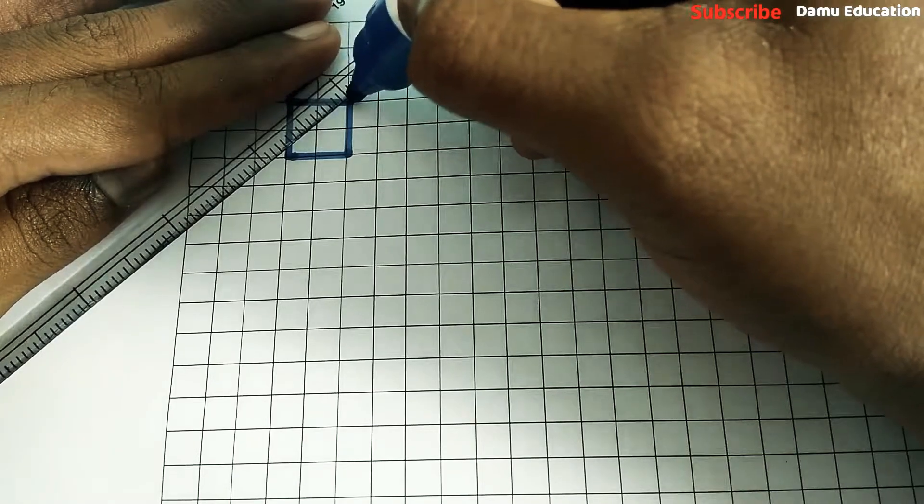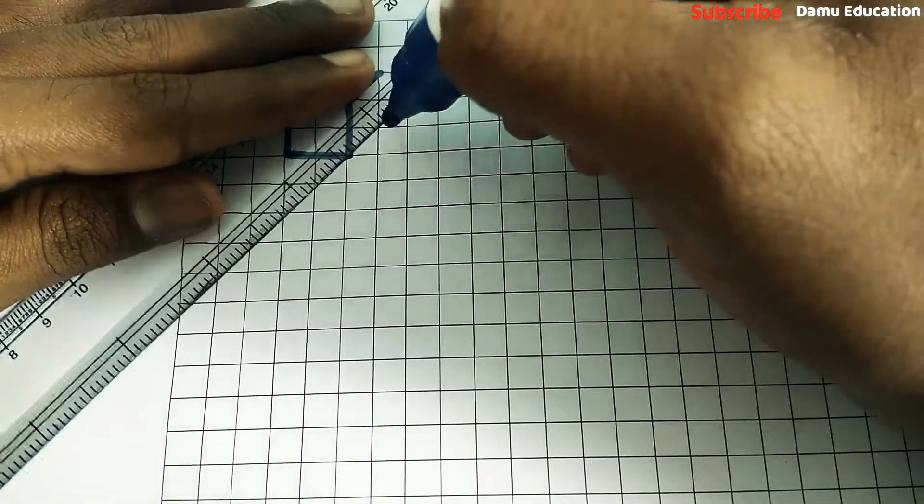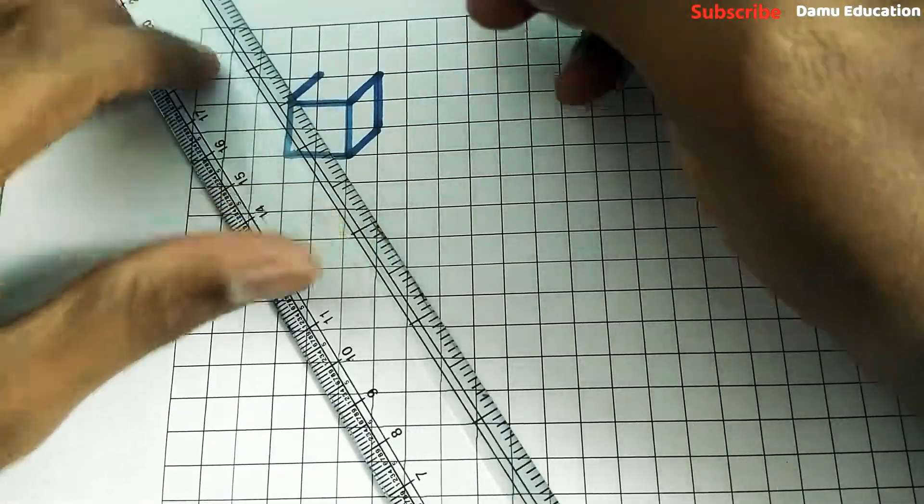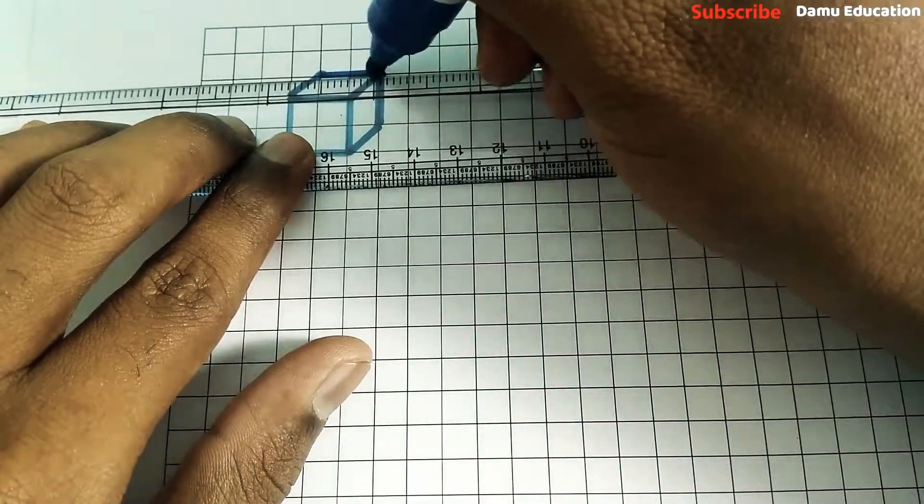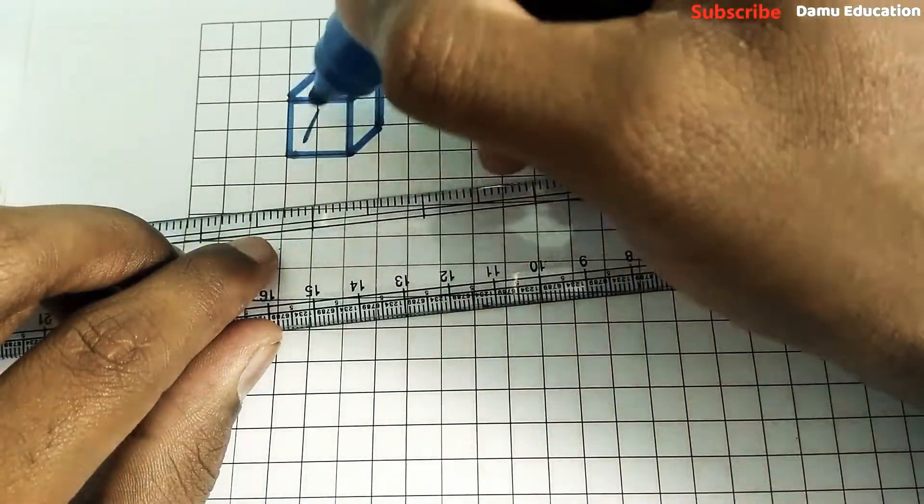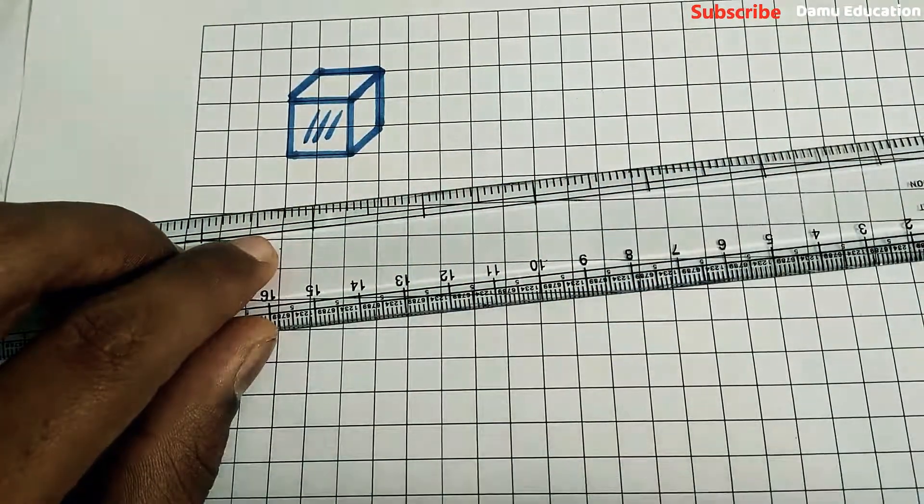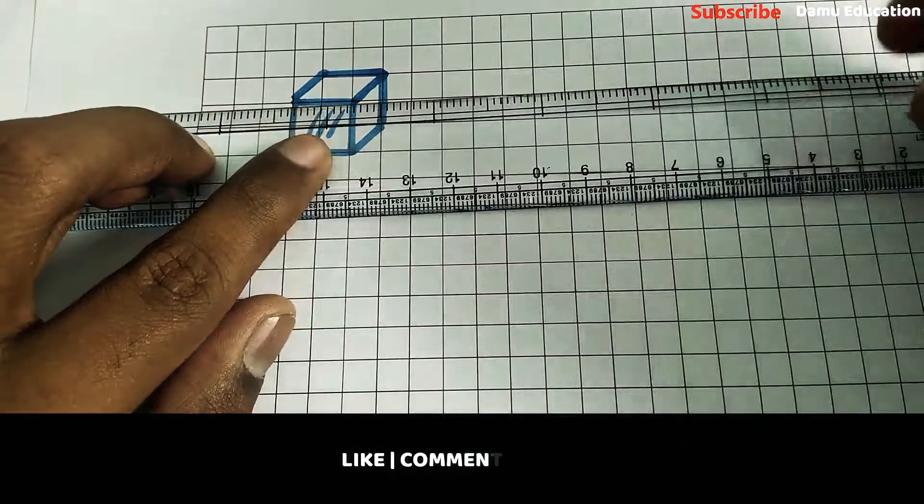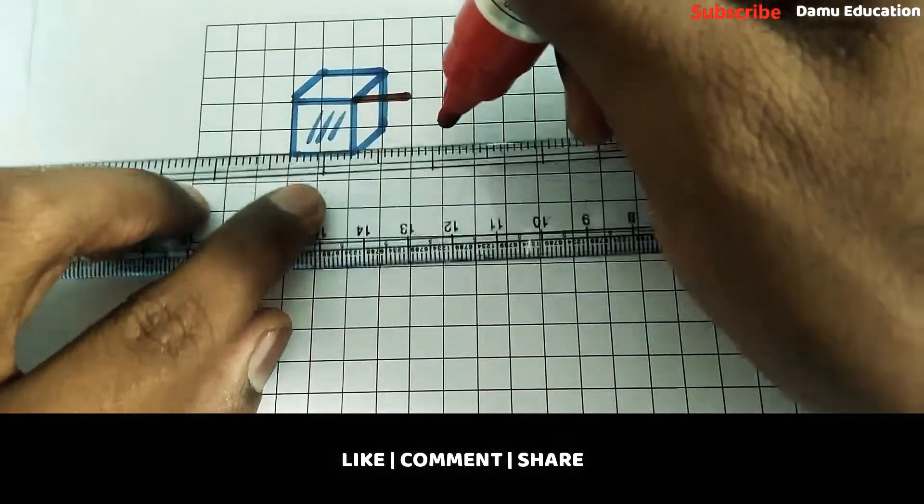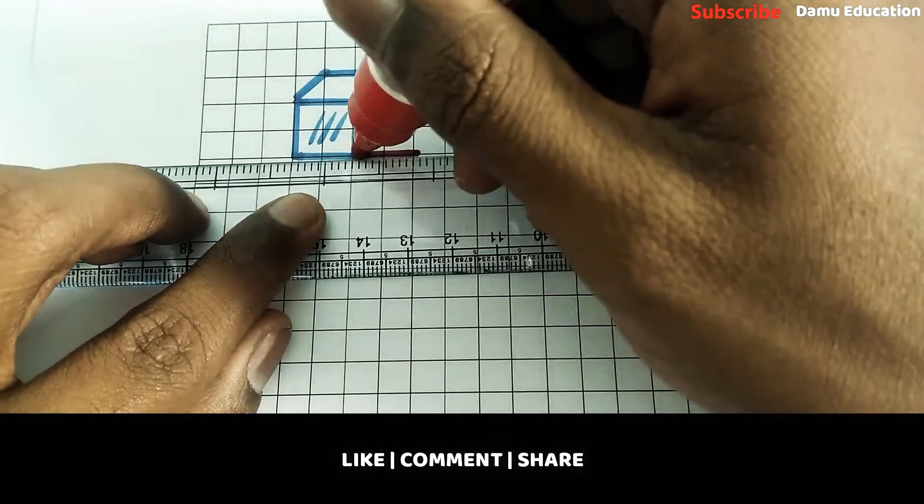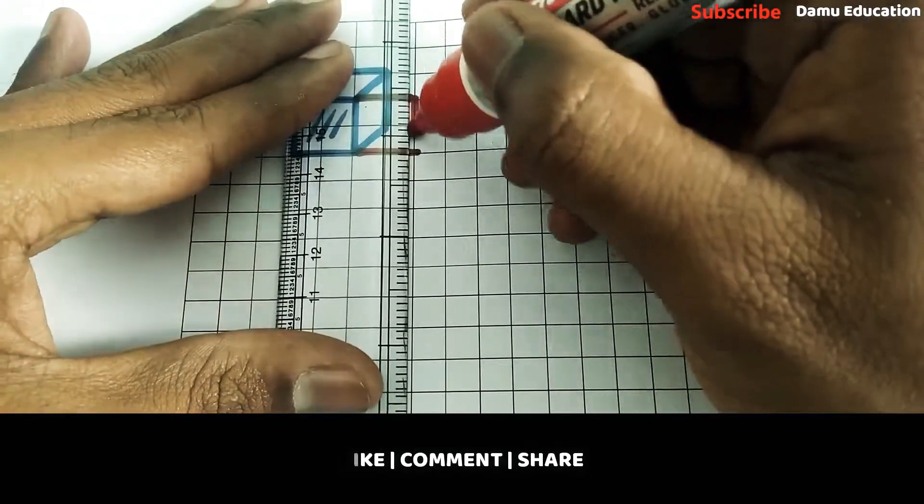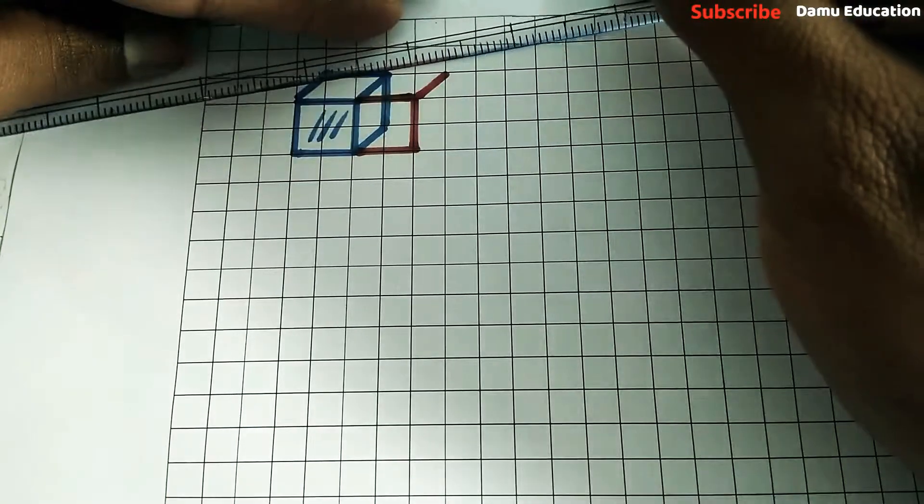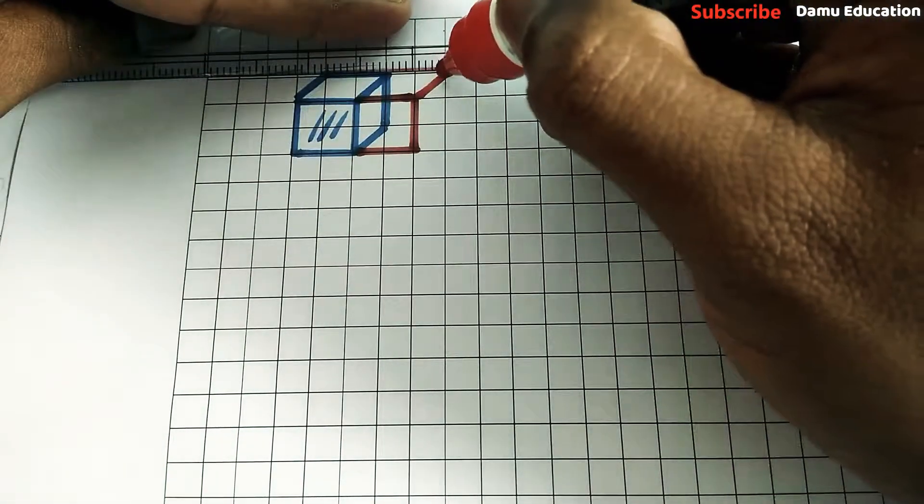Next, again we should add one more cube. What is one more cube? Just extending of this one to this: 2 cm, 2 cm. So 2 cm like this. And simply we are joining. We can draw like this also, no problem.